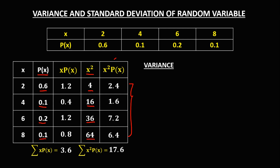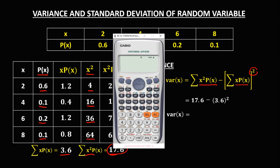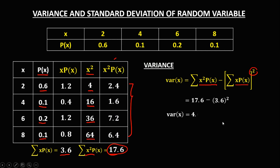To find the variance using the formula, we substitute the values. The summation of x squared times P(x) is 17.6, minus the square of the summation of x times P(x), which is 3.6 squared. So we have 17.6 minus 3.6 squared, and the variance is 4.64.